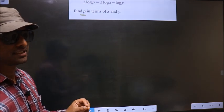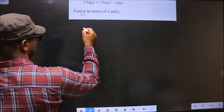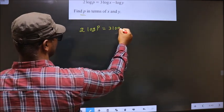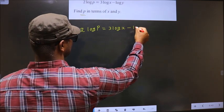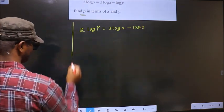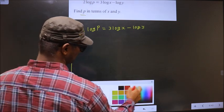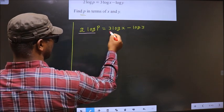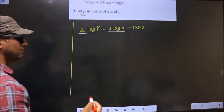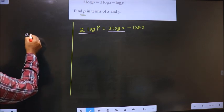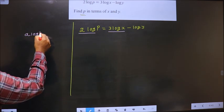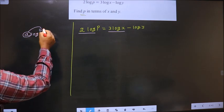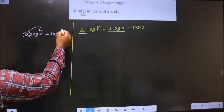First, the given equation is 2 log p equal to 3 log x minus log y. Now I will apply the formula that is a log b. When you have a number before the log, it will go as the power making it log b power a.